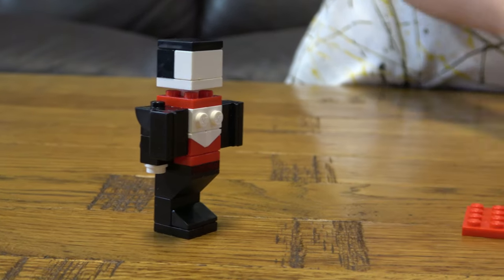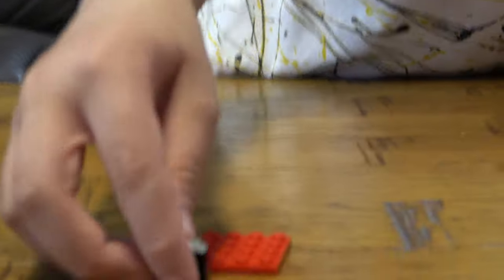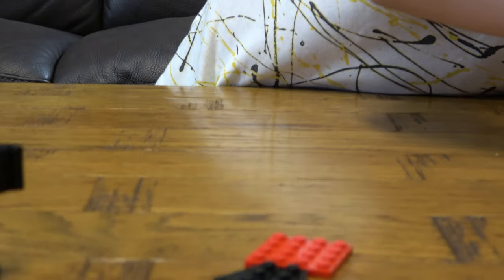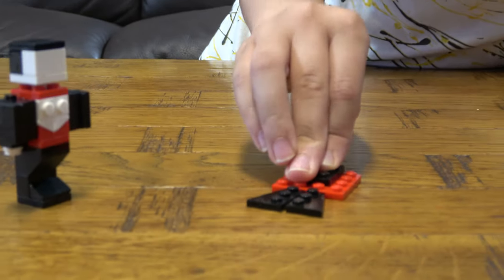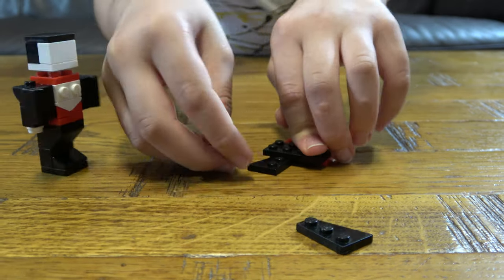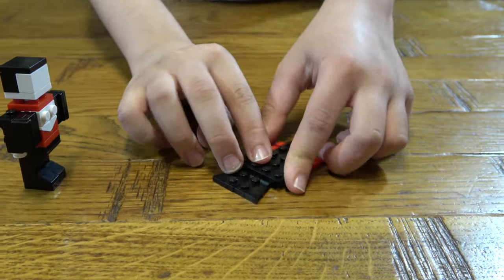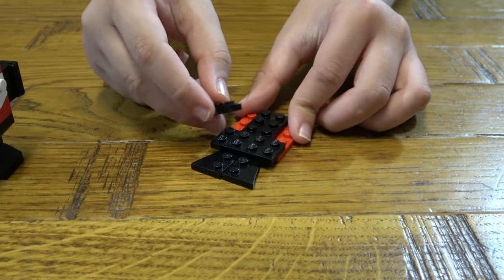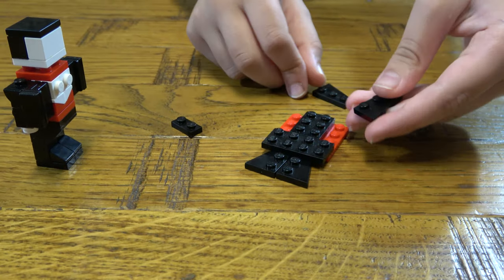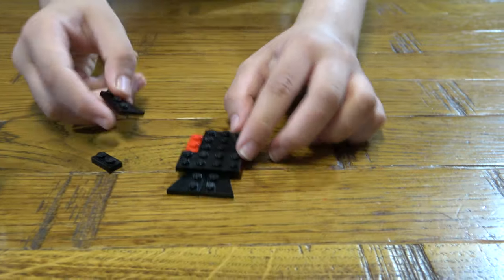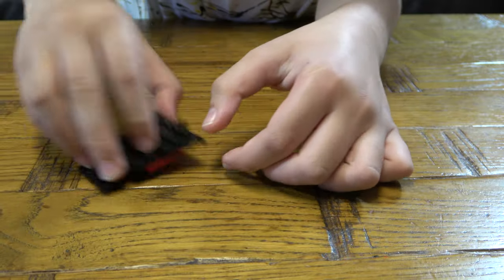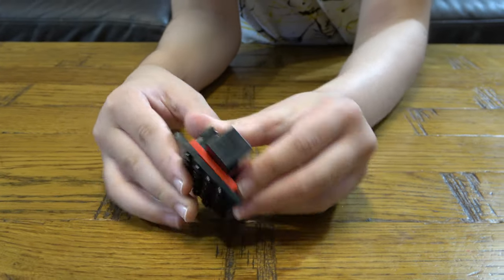And now we get one of these, we get two of these. Then we get this, we place it here, this here like so, these two here like this, this here and then we put it onto here like so.